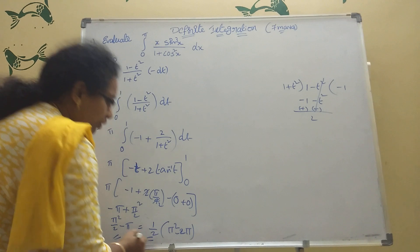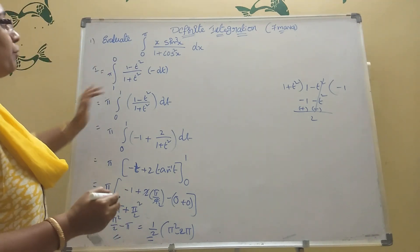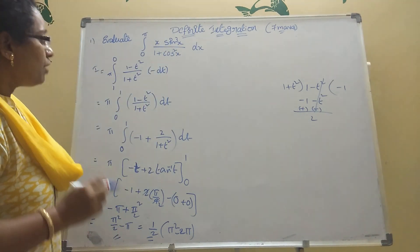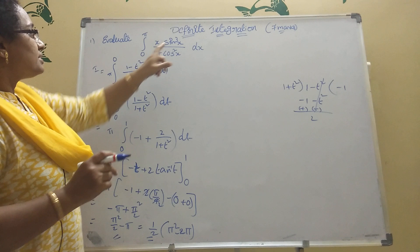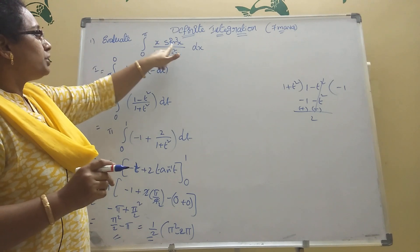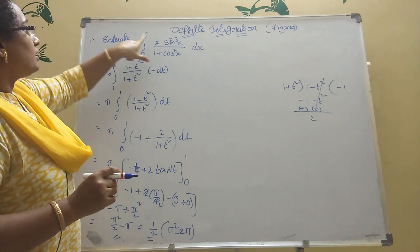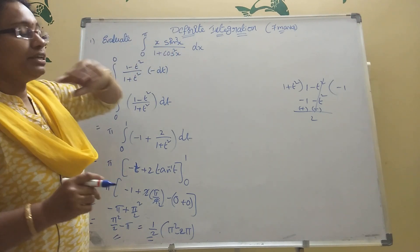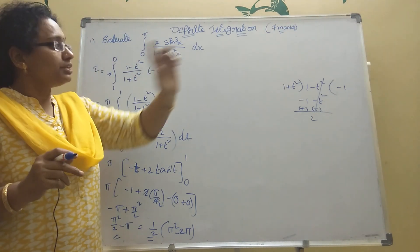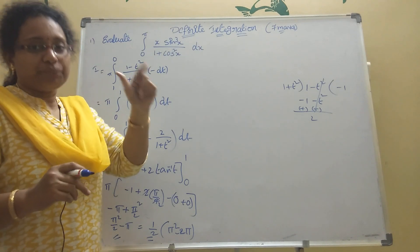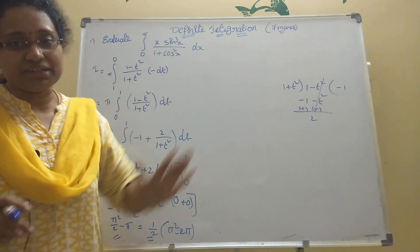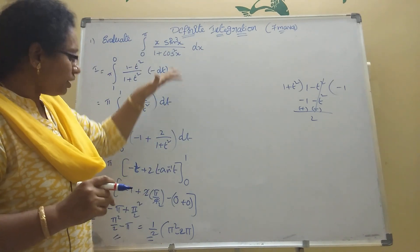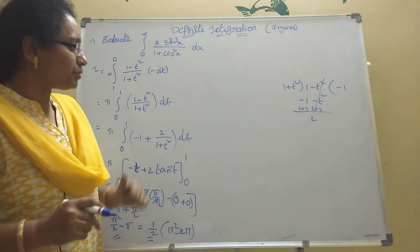This is a very important model. You should know how to evaluate this. The key steps: when you see 0 to π, use the formula integration of 0 to a of f(a − x) dx. Then use that formula — it will be easy.